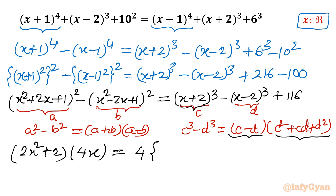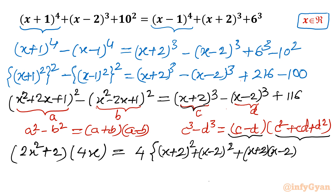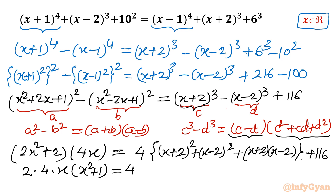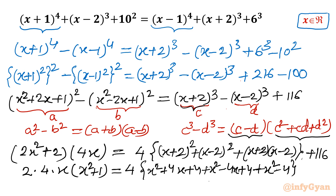In the bracket it is c²+d²+cd. So (x+2)² plus (x-2)² plus (x+2)(x-2), and then 116. Expanding the RHS bracket: (x²+4x+4) plus (x²-4x+4) plus (x²-4). The ±4x terms cancel, and the constants simplify within the bracket.